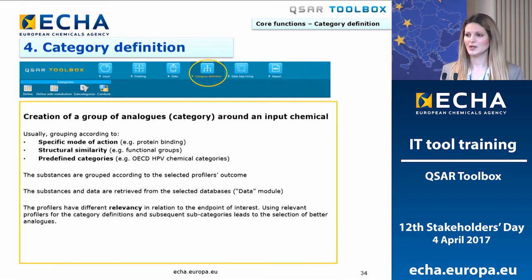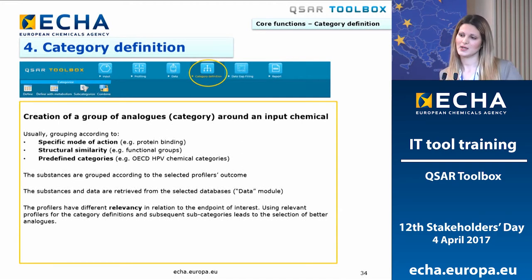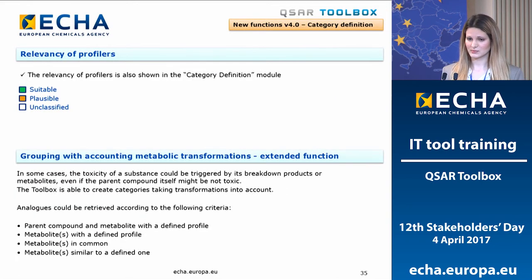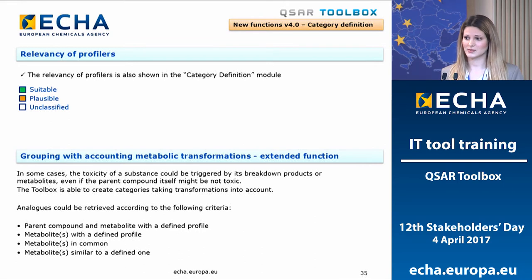In the Category Definition section, you concretely create your group of chemicals. Starting from your input chemical, you retrieve analogues based on profiler outcomes. The toolbox will suggest the most suitable profiler to create your category. An extended new function allows you to create a category also taking into account metabolic transformation.